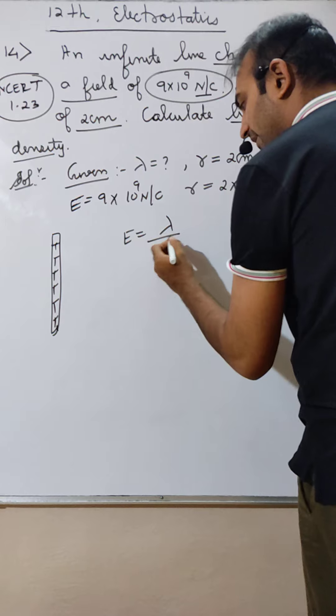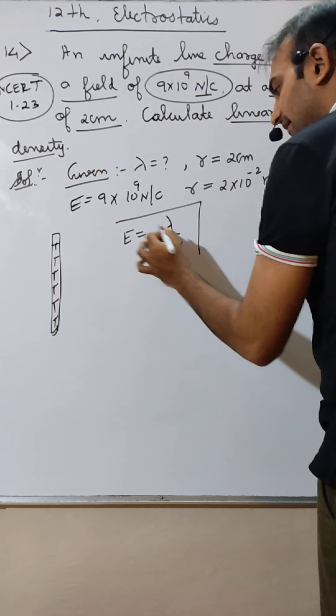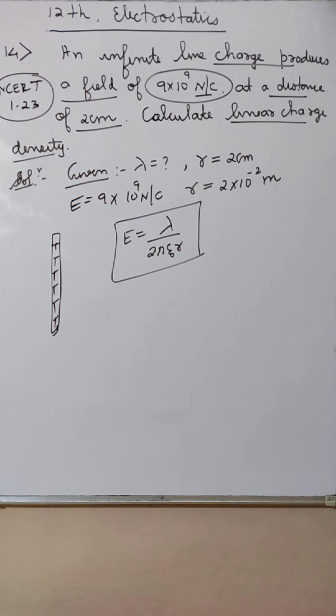The formula: Electric field is lambda by 2 pi epsilon not r. Correct. This formula: electric field is lambda divided by 2 pi epsilon not r for line charge density.